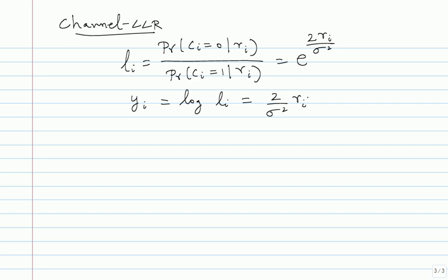The channel log likelihood ratio, which I'll call y_i, is log(L_i) = (2/σ²) × r_i. Since capital L_i is a function purely of the small l_i's, I can say capital L_i is purely a function of the y_i's. So instead of my decoder working with r_i, I might as well work with y_i — the difference is just a simple scaling. y_i is the log of the ratio of two probabilities, which is more useful.